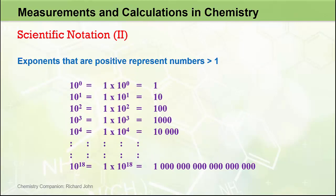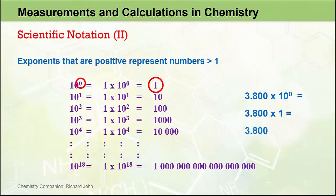As this table shows, exponents that are positive represent numbers that are greater than 1. If we start with the number 10 to the 0, where the exponent is actually 0, we see that this represents the value of 1, since 10 to the power of 0 is equal to 1. So a number like 3.800 times 10 to the 0 actually represents 3.800 times 1, which just equals 3.800. The decimal place in the coefficient has not moved, because the exponent is 0.